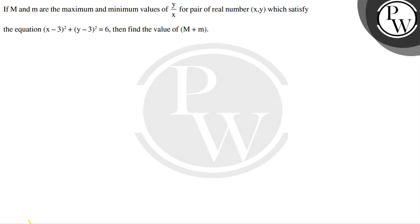Hello, let's see the question. The question says: if capital M and small m are the maximum and minimum value of y divided by x for a pair of real numbers x, y which satisfy the equation (x minus 3)² plus (y minus 3)² equals 6, then find the value of capital M plus small m.